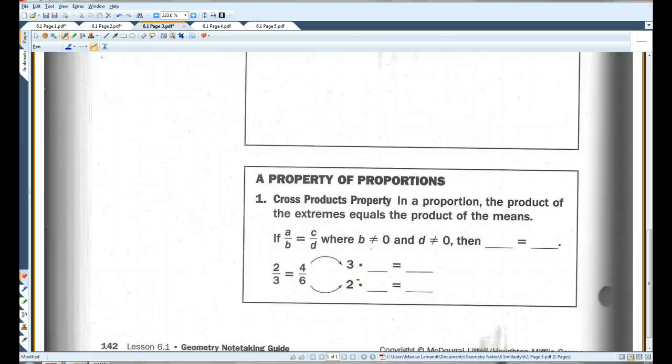A property of proportions. If A over B equals C over D, where B and D do not equal 0, then AD equals BC. This is called cross multiplication. Most of you guys are already familiar with it.